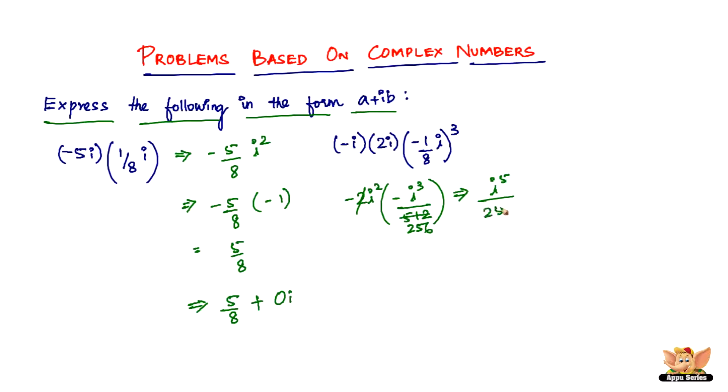We have negative times negative becoming positive, and i squared times i cube is i to the power 5. So it is i to the power 5 divided by 256. Now if you remember from previous videos, to solve i to the power of something greater than 4, you divide that exponent by 4.